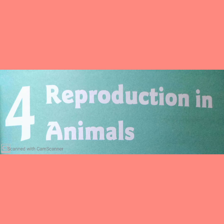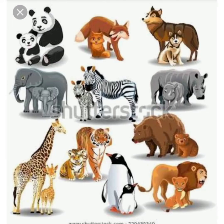Let's start a new chapter — Chapter 4, Reproduction in Animals. What do you mean by reproduction and why is it important? Reproduction is the process by which an organism produces its offspring, or babies, or young ones. In simpler terms, we can say it is the creation of a copy of the same thing.